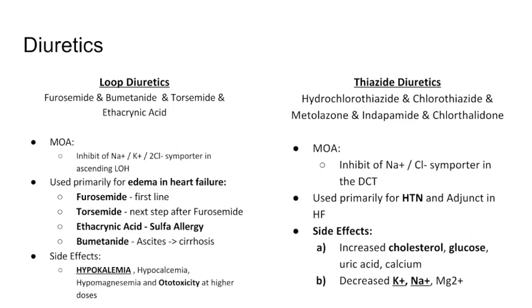Thiazide diuretics — hydrochlorothiazide, chlorothiazide, metolazone, indapamide, and chlorthalidone. These work in the distal convoluted tubule and inhibit the sodium chloride symporter. Like the loop diuretic, we have the sodium-chloride symporter bringing those two substances in, reabsorbing them from the nephron.